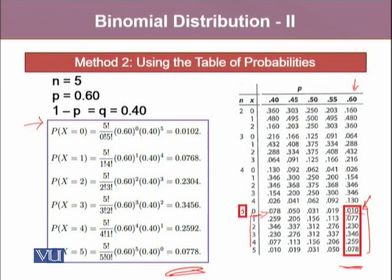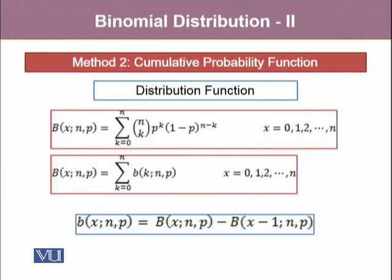So we can use either the table or the probability mass function to find out the probabilities for certain experiments. We can also use the cumulative probability function of the binomial probability distribution, which is also known as the distribution function. This distribution function is denoted by capital B(X, N, P), where N and P are the two parameters of the binomial probability distribution, and X denotes the possible number of successes from the trial. Capital B notation is used to describe the distribution function or cumulative probability distribution.